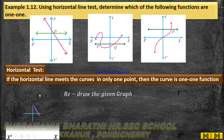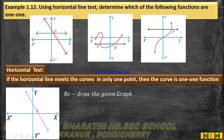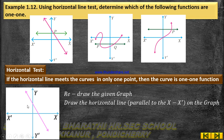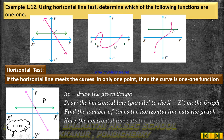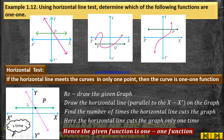So for the first graph, we can see the xy plane with the graph shown in pink color. Now we draw the horizontal line parallel to the x-axis. Here the horizontal line cuts the graph only one time, hence the given function is a one-to-one function.